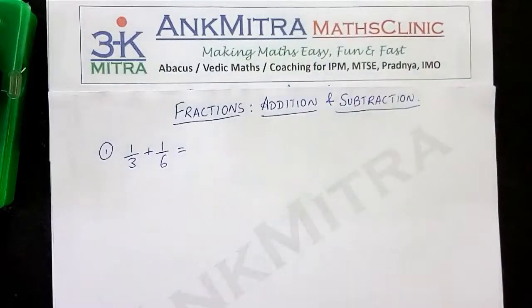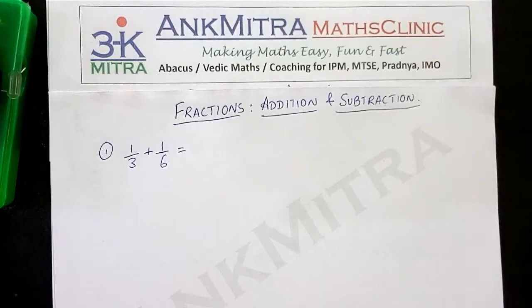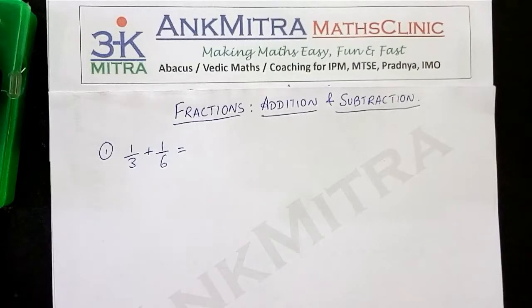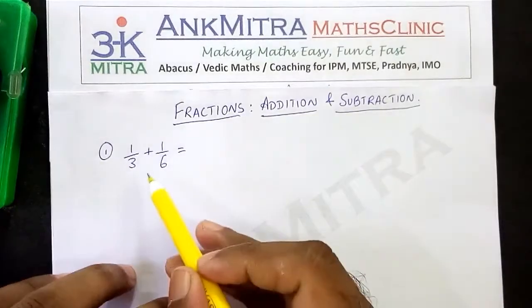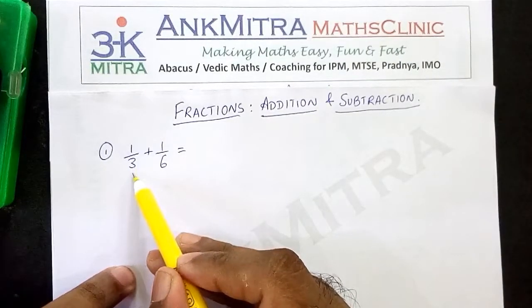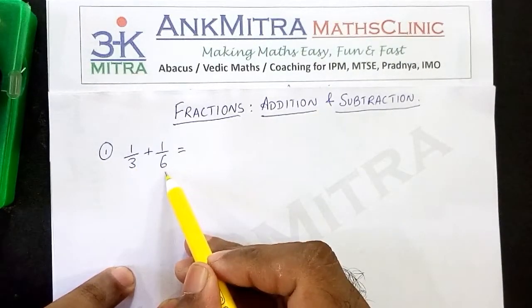The first thing to be done while adding or subtracting fractions is to check the denominators of the two fractions. The denominators of the two fractions have to be equal, that is the same number. Only then we can proceed with the next step of addition of numerators. Until then we cannot add the numerators. So first thing is to check the denominators. In this case, the first fraction's denominator is 3, the second fraction's denominator is 6.